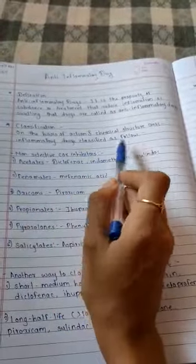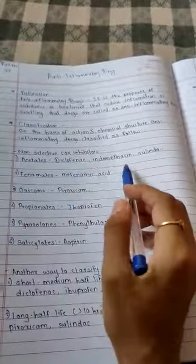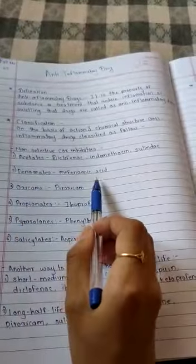Classification on the basis of action and chemical structure: anti-inflammatory drugs are classified as follows. Non-selective COX inhibitor first: acetate diclofenac, indomethacin, sulindac. Second: fenamic, mefenamic acid.